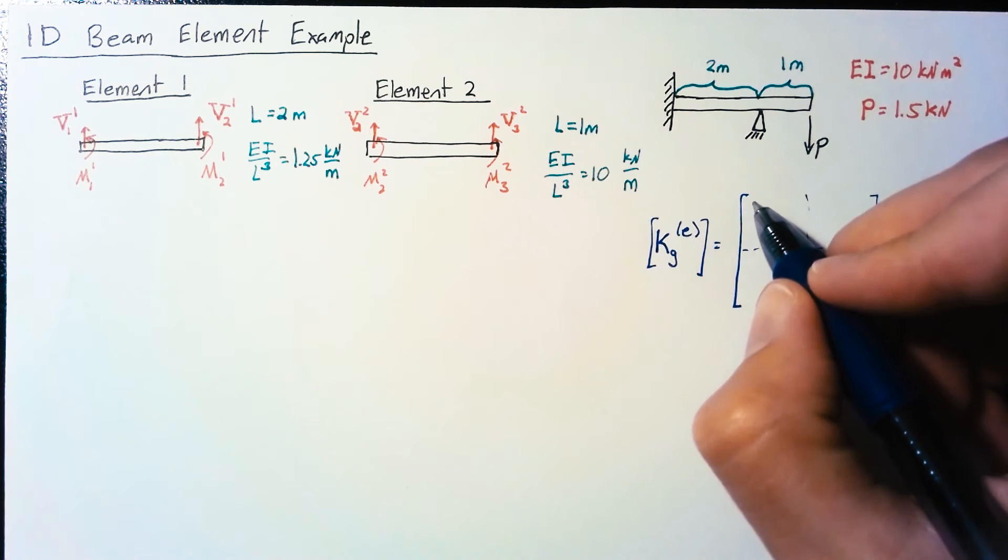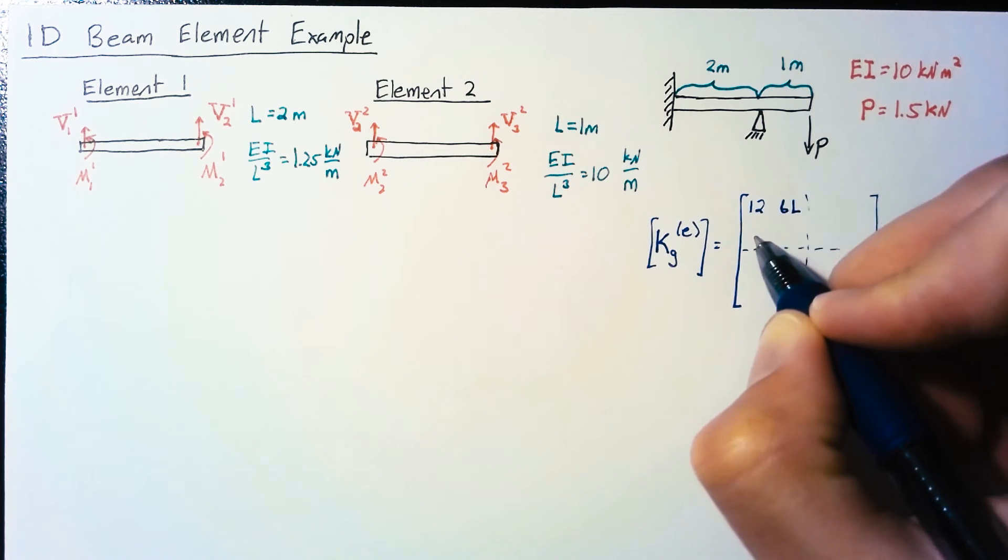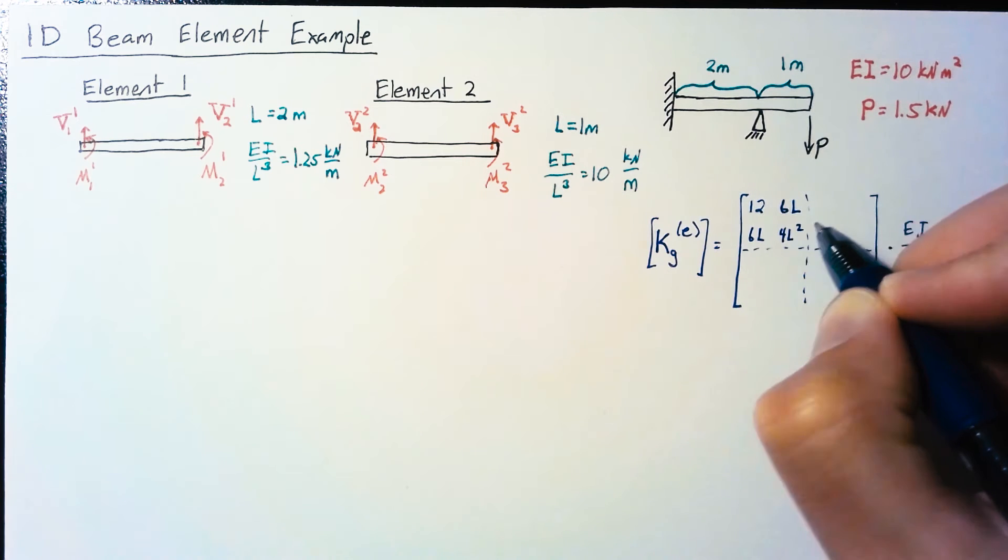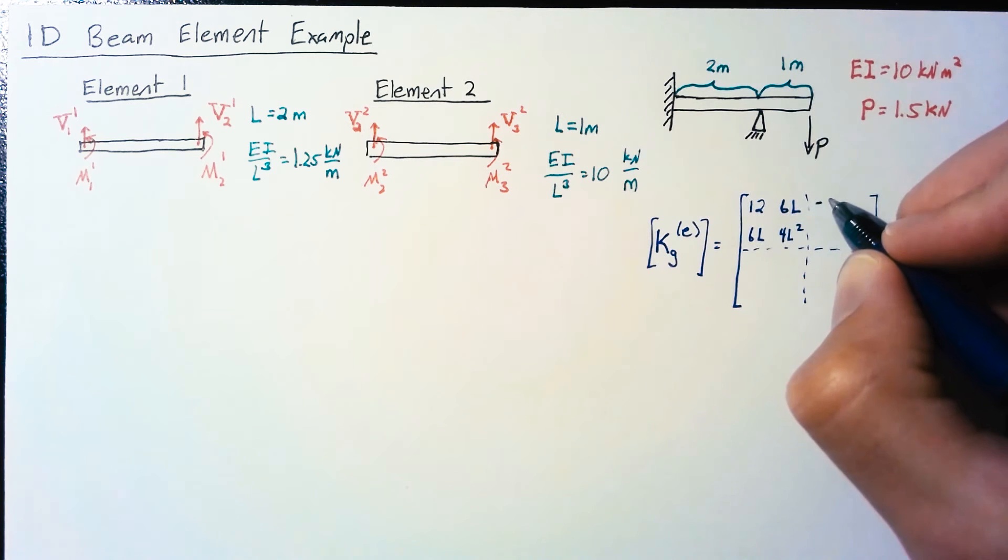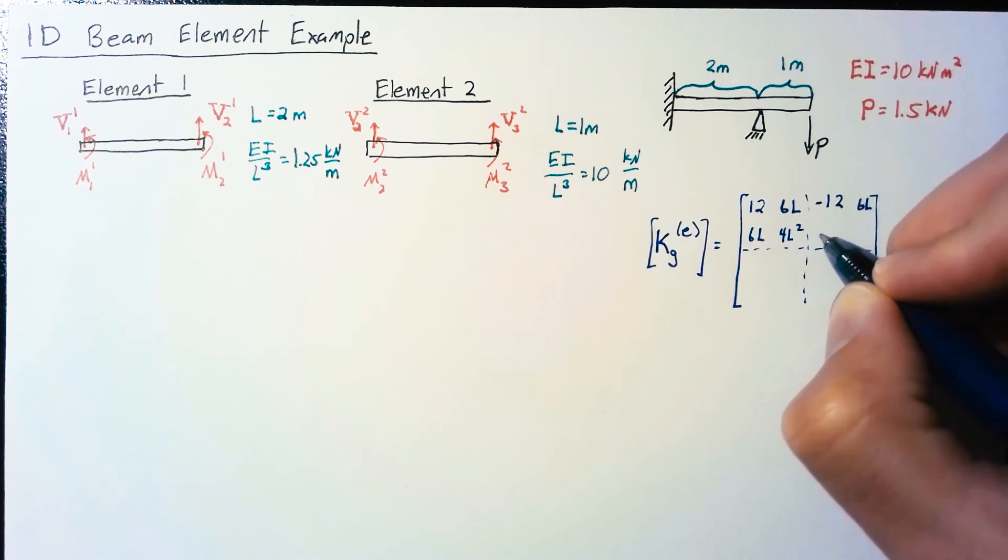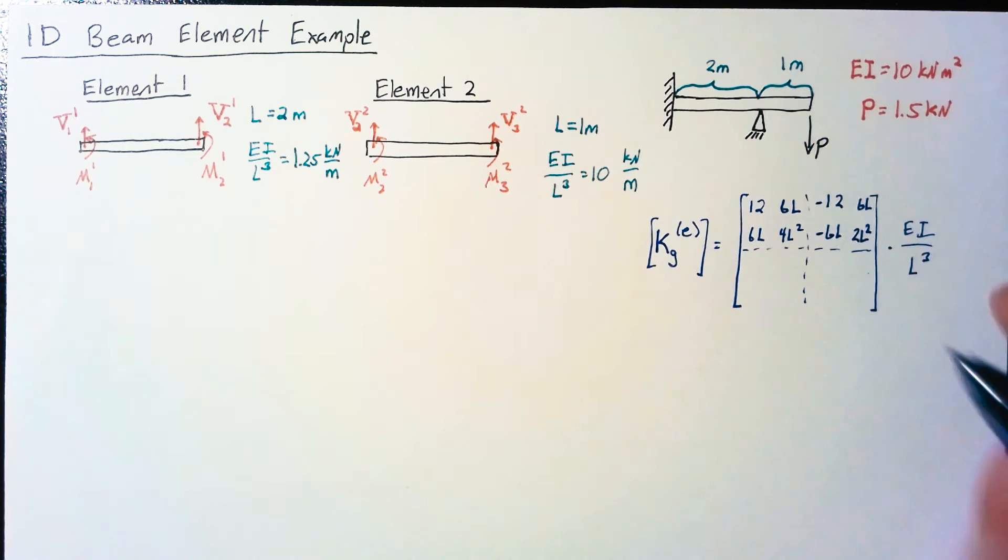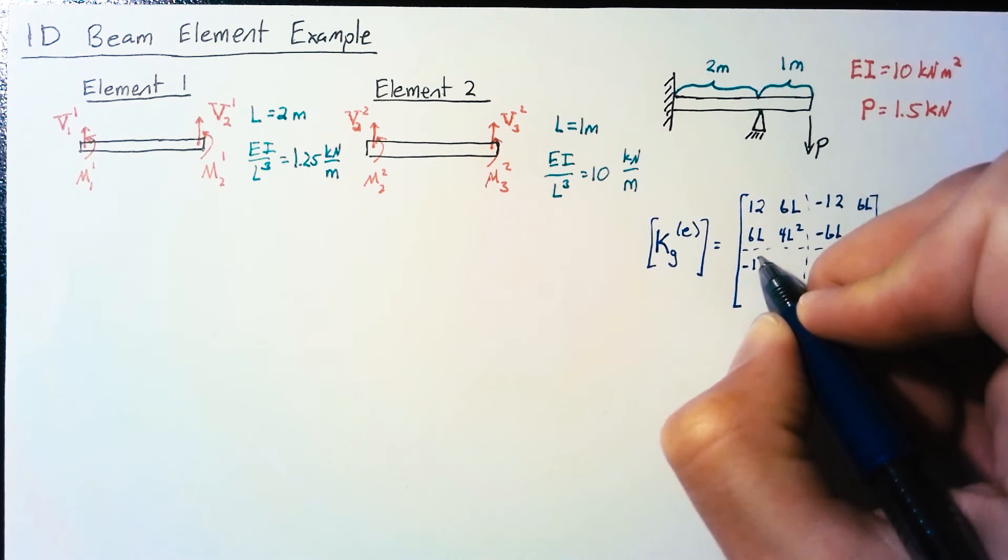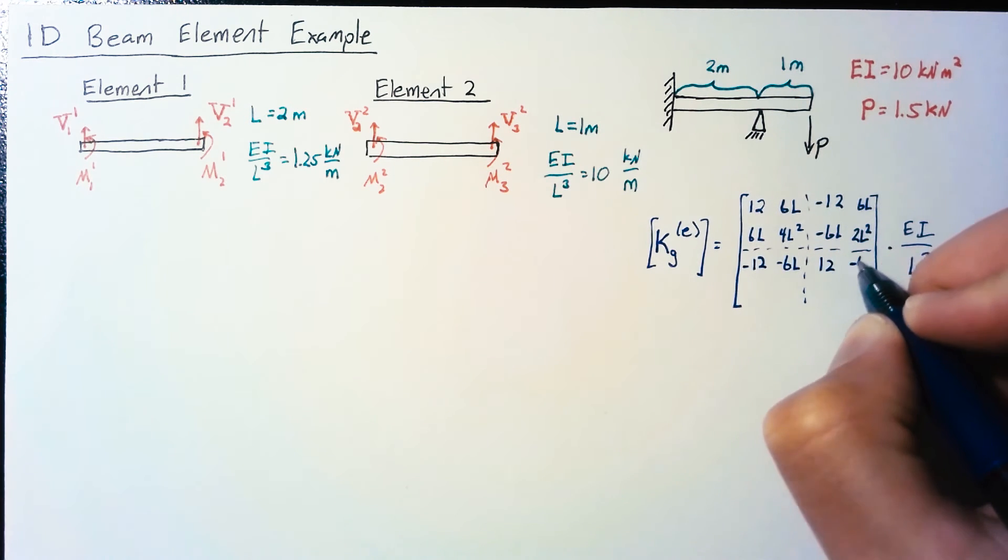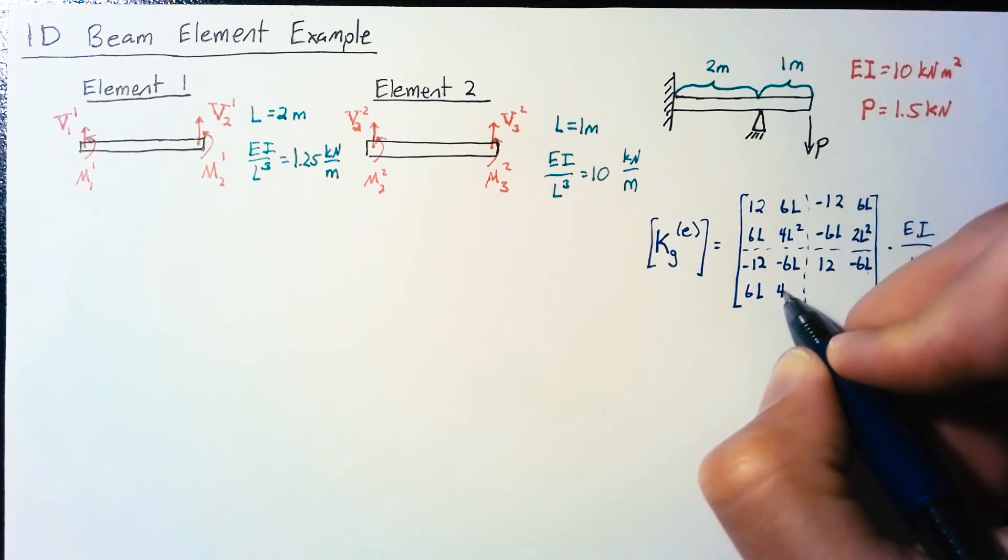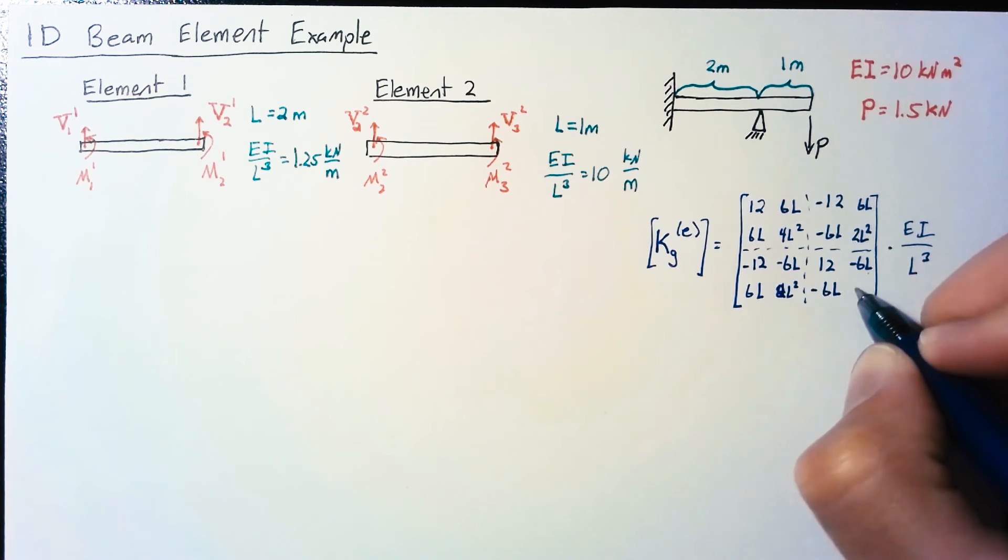Top left submatrix is 12, 6L, 6L, 4L². Top right is -12, 6L, -6L, 2L². The third row is negative times the first row, and the last row swaps the 4 and 2 from the second row.